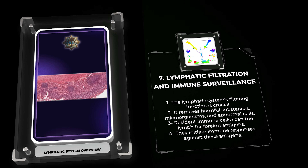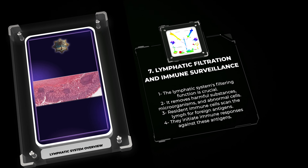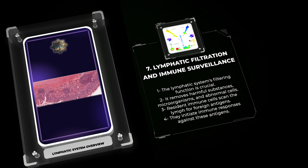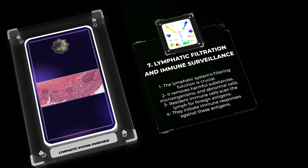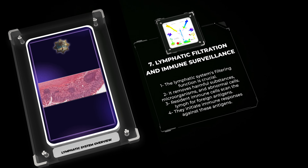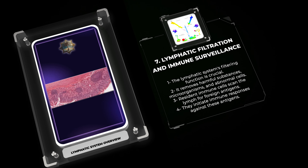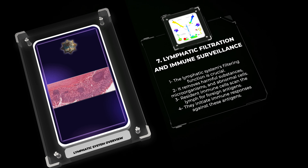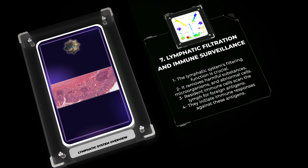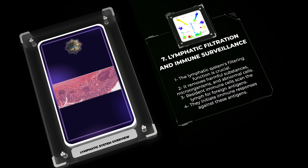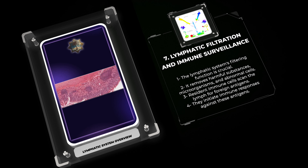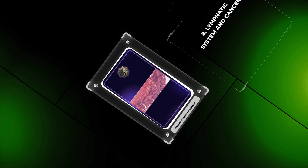The lymphatic system's filtering function is crucial in removing and neutralizing harmful substances, microorganisms, and abnormal cells. As lymph fluid passes through lymph nodes, resident immune cells — including lymphocytes, macrophages, and dendritic cells — scan the lymph for foreign antigens. They recognize, bind, and initiate an immune response against these antigens, facilitating their destruction and preventing the spread of infection. This immune surveillance mechanism helps protect the body from a wide range of pathogens.